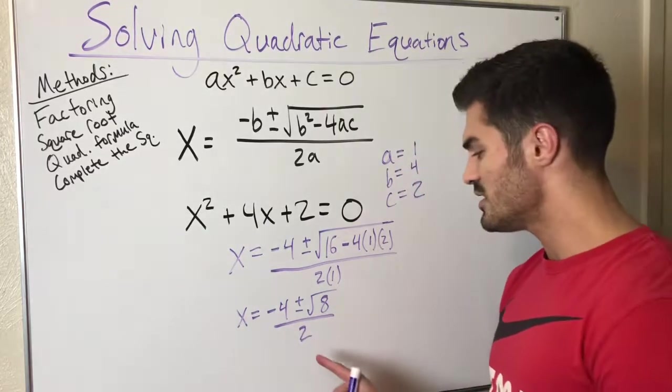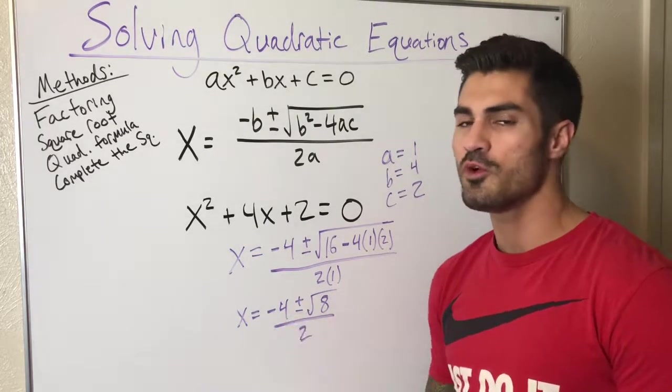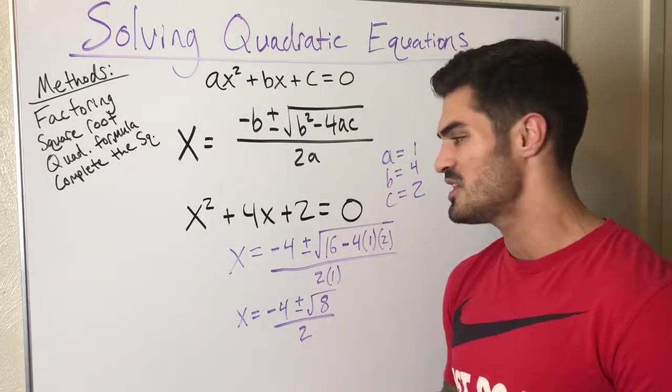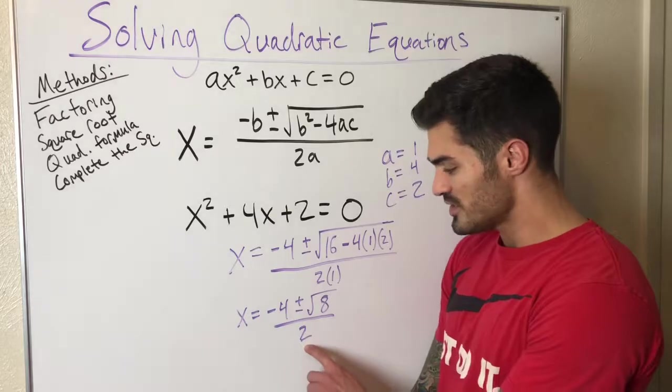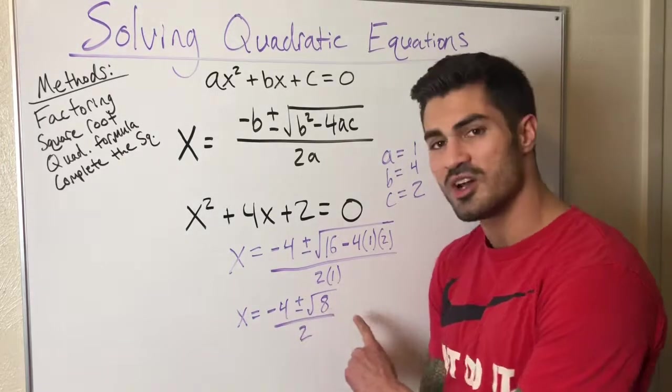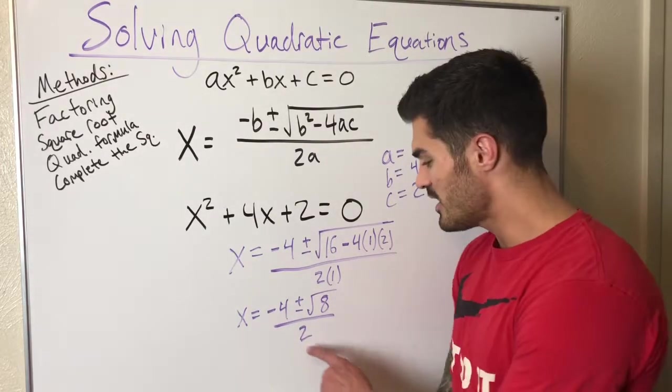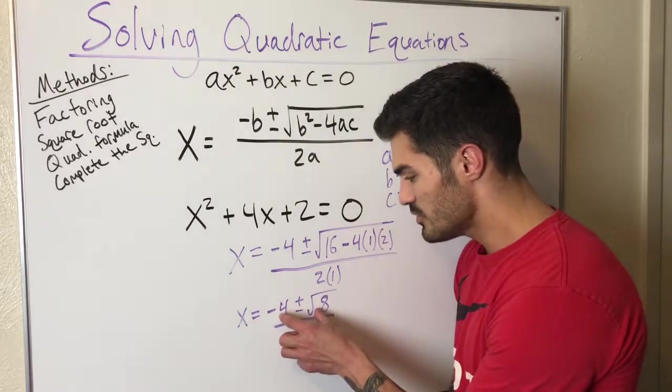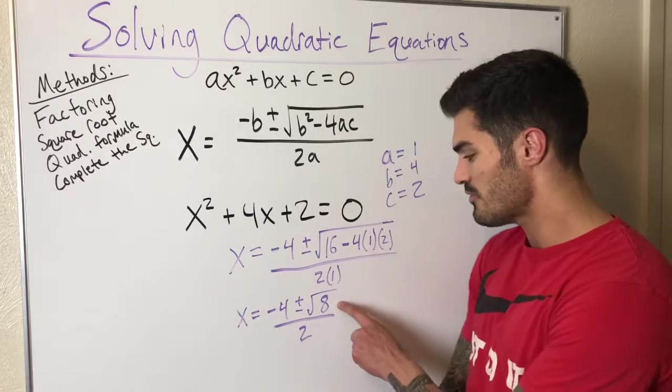You may be tempted to cancel the 2 into this negative 4. Be real careful at this step. This is when I see so many algebra mistakes happen. Remember, I can't cancel this 2 unless I can cancel it into both these top terms. It has to cancel with both of these top terms.